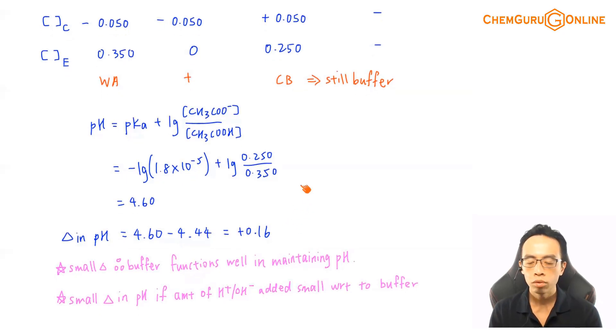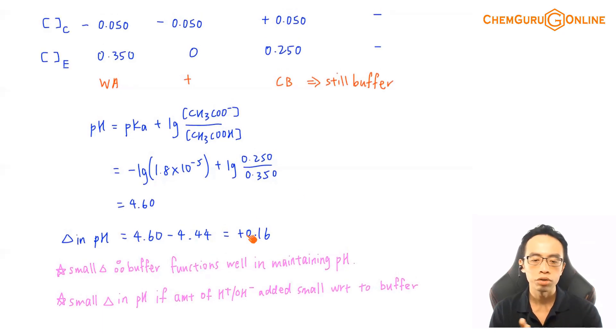In general, most of the questions that we encounter for buffer, if I do calculation question, at the beginning this is a buffer. You add small amounts of H⁺ or OH⁻, usually this is limiting. The resultant solution, we can fill up using the ice table, we can determine that the resultant solution is a buffer. And if the resultant solution is a buffer, I can still use the buffer equation to find the pH of this buffer solution. And usually we will be able to show that the change in the pH is very small, usually it's about 0.something unit, so it shows that the buffer functions reasonably well in terms of maintaining pH.